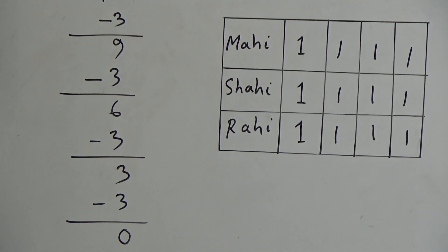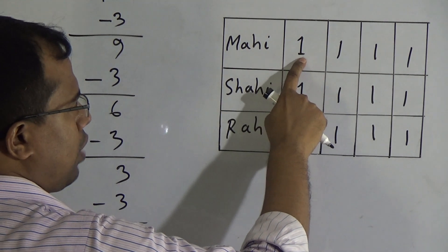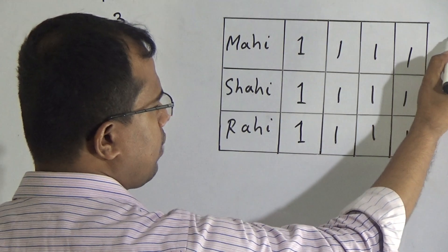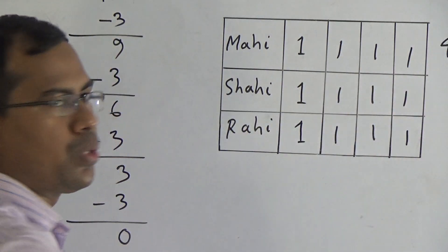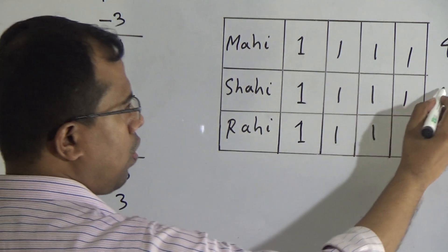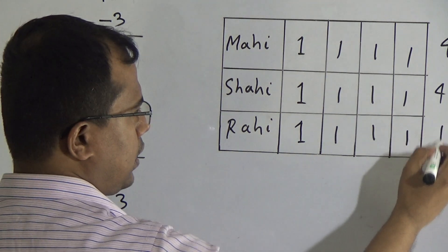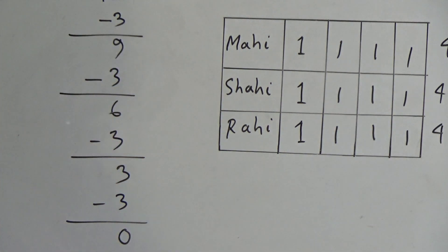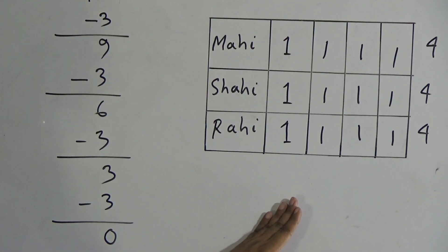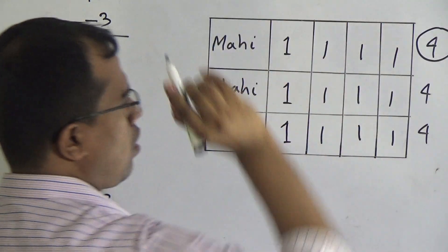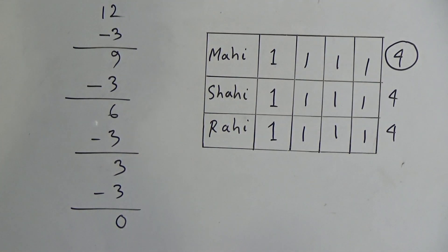Now we will see how many chocolates each student will get. Mahi will get 1 plus 1 plus 1 plus 1 equals 4. That means Mahi got 4 chocolates. Shahi also got 4 chocolates. And Rahi also got 4 chocolates. That means each of my students has got 4 chocolates. This 4 is called the quotient of the division.